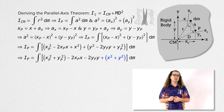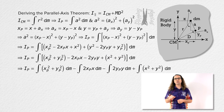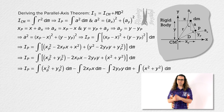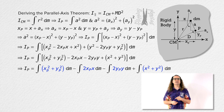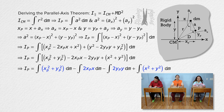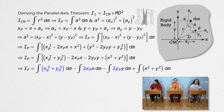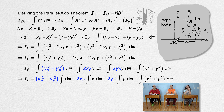Let's organize this equation into separate integrals so we can evaluate them more easily. Which of these letters are constants and can therefore be taken out from under their integrals? X sub p and y sub p are constants, so they can be taken out from under the integral. However, x and y are variables, so they cannot be taken out from under the integral.